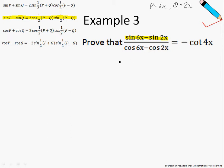So by using the factor formula, I will arrive at 2 cosine half of P plus Q, which is 6x plus 2x. This is the left-hand side of my function: 2 cosine half of 6x plus 2x, sine half of 6x minus 2x. This is what we have for the numerator over here.